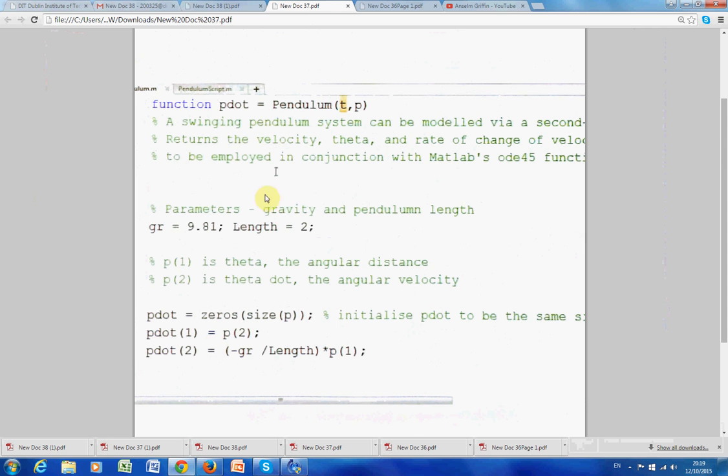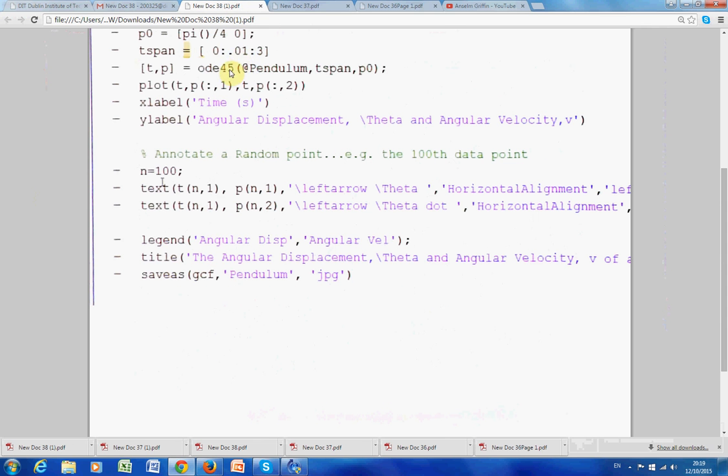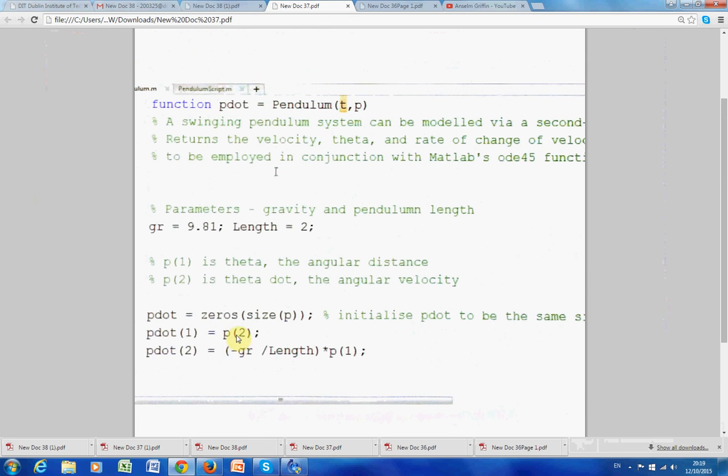Now, the... Just go back here. This guy here. What is the velocity? What's the initial velocity? Zero. So, the initial velocity is zero.